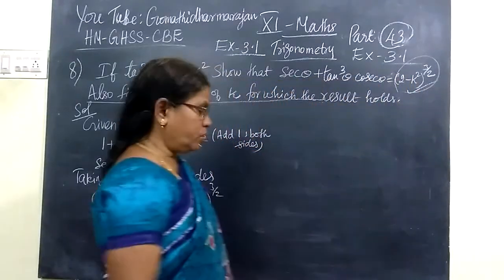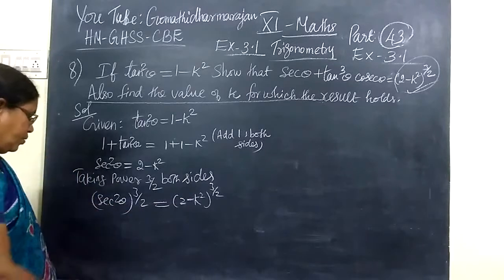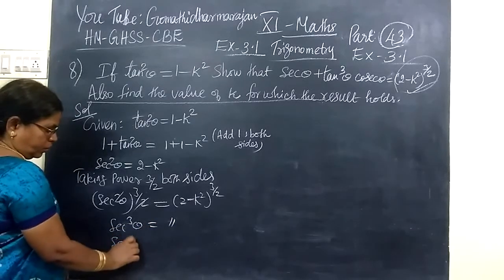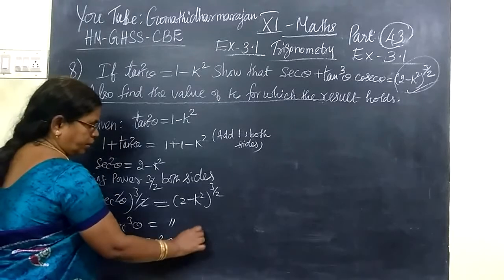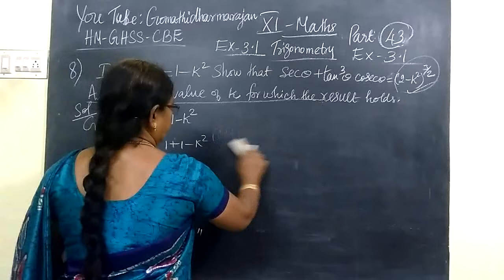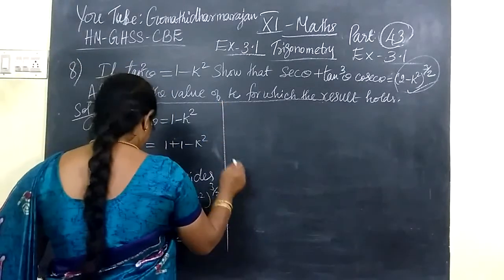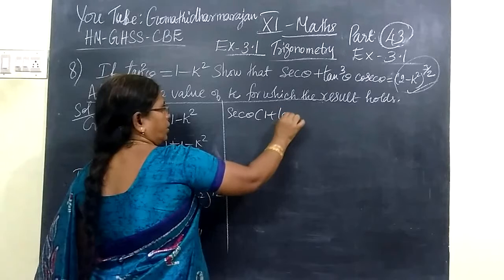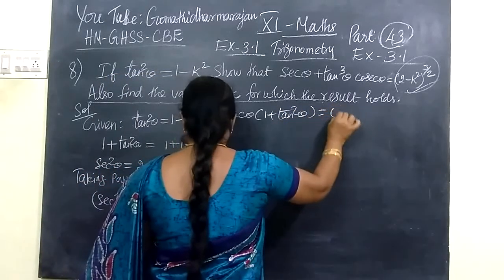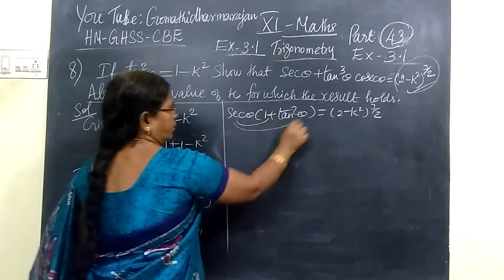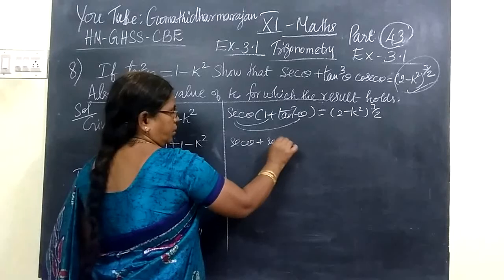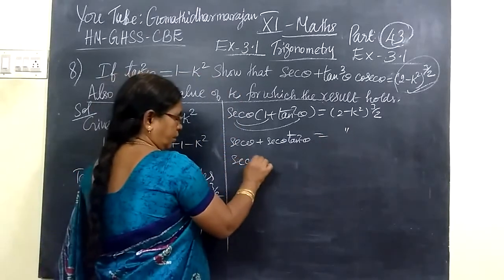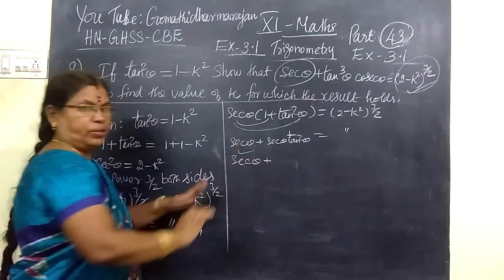Taking the right hand side — we write secant θ, secant square θ. We know that 1 plus tan square θ equals secant square θ. So in the secant square θ, we write 1 plus tan square θ equal to 2 minus k square to the power 3 by 2. Taking secant θ inside: secant θ times tan square θ.